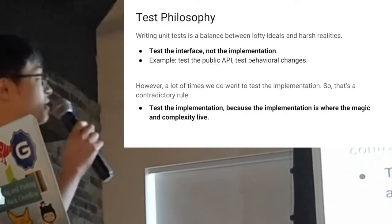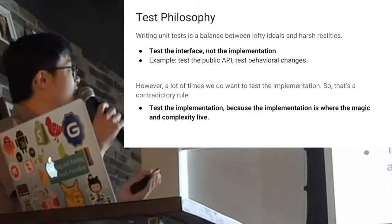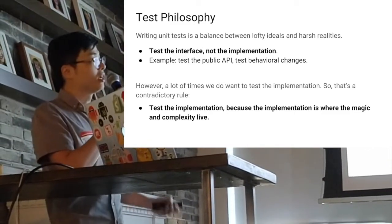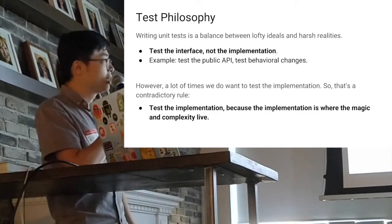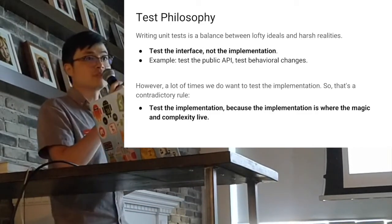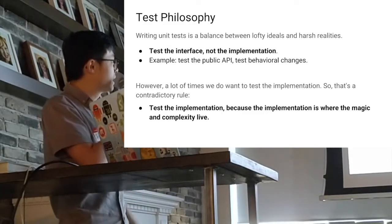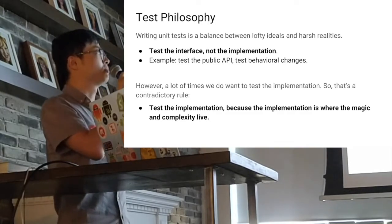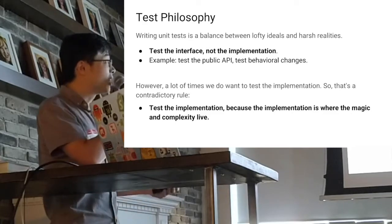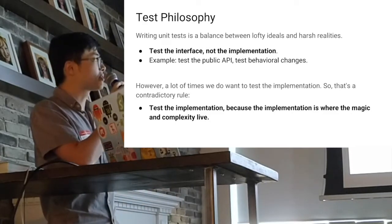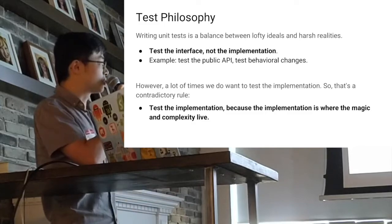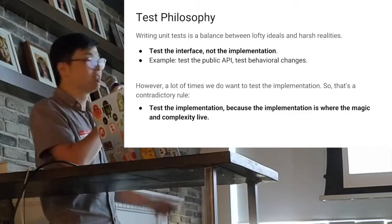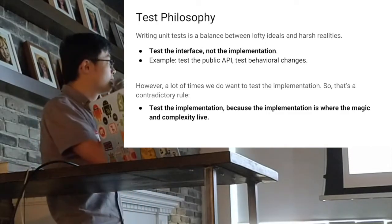First thing first, I want to talk about test velocity. Unit tests is a balance between lofty ideas and harsh reality. We usually test the interface, not the implementation — for example, test the public API, test behavioral change. However, a lot of times we do want to test implementation. That's a contradictory rule. We test the implementation because implementation is where magic and complexity live.